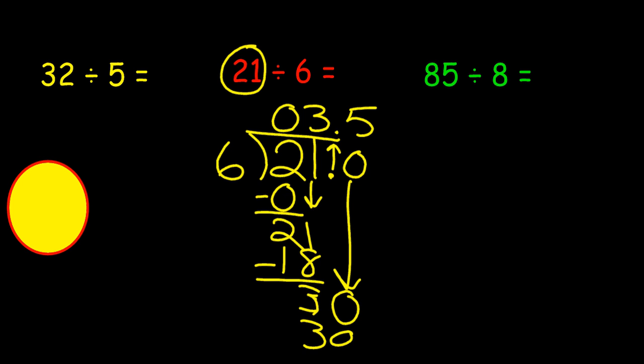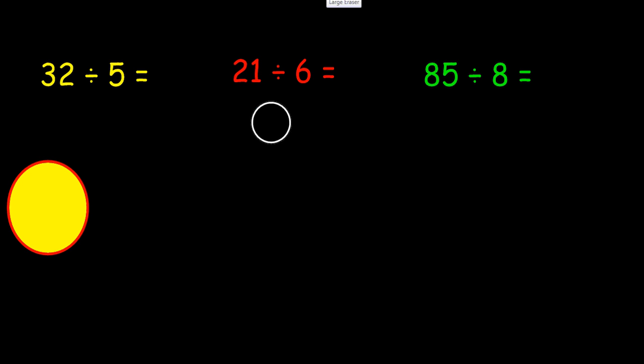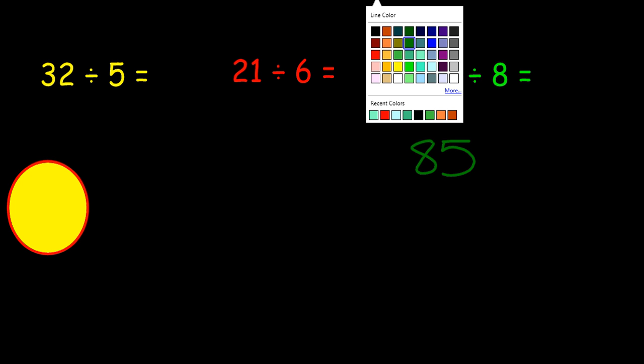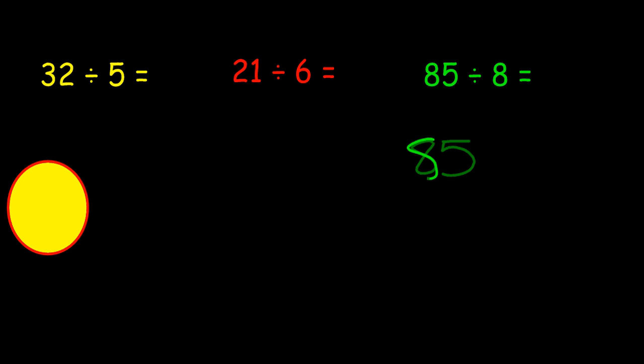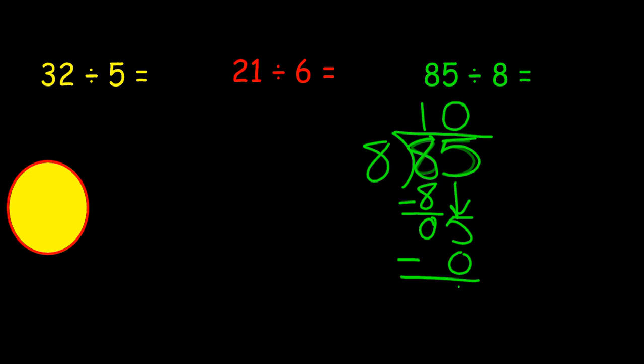Now let's do the last problem. See if you can do it on your own first. Okay, we're going to do it together. 85 divided by 8. Oh, I better use a different color. Let's use a brighter one. 8 goes into 8 once. And I subtract, bring down my 5. 8 does not go into 5, so what I have to do is put a 0 up here. 0 times 8 is 0. When I subtract, I get a 5.